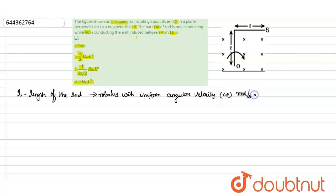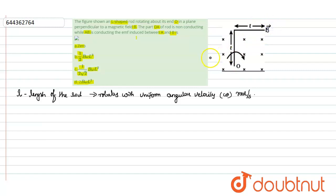It rotates about an axis passing through its end point, normal to its length, in a uniform magnetic field. The magnetic field induction value is B, with its direction parallel to the axis of rotation.